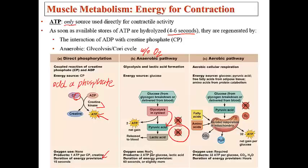Once pyruvic acid is made, since there is no oxygen present, lactic acid will be released into the bloodstream. The other situation that can also occur is the Cori cycle, which is going to convert the lactic acid back into a source that can then be used for eventual ATP production.